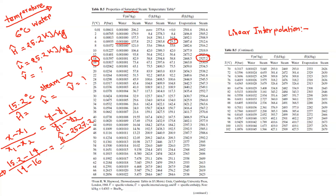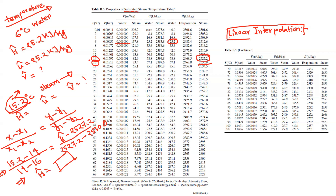Okay, y1 is equal to 252 minus y2. y2 is equal to 16 degrees Celsius, which is 253 degrees. If you want to see interpolation, you will see the math. Interpolation is very important.